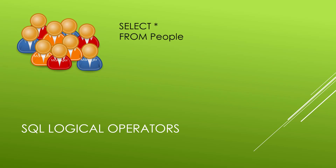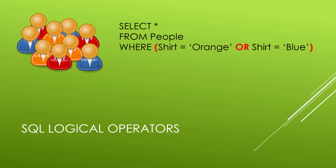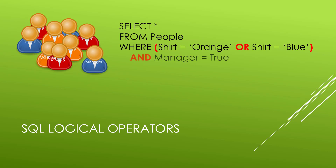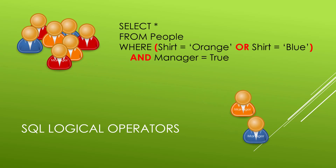We might add a SELECT statement from the people table, and then add a WHERE statement where we use the OR operator — a logical operator — saying where the shirt is orange OR the shirt is blue. That would select all individuals with an orange or blue shirt. We can also add the AND operator to say also where the manager is true, so we only get those individuals who are managers and have an orange or blue shirt.